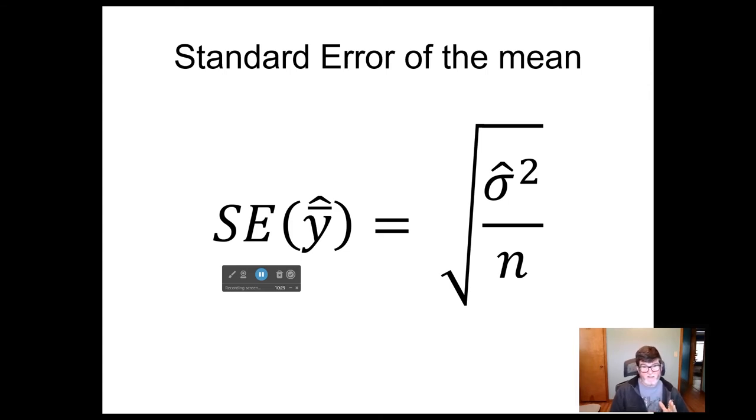Because this is actually the square root of n, it's not linear, so it declines quickly when we have a small sample size. And then once you get up to larger and larger sample sizes, you get sort of diminishing returns.